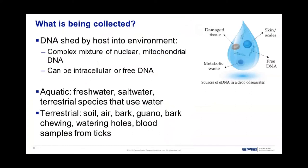What's being collected is DNA shed by the organism into the environment — a complex mixture of nuclear and mitochondrial DNA. In a drop of water there's metabolic waste, damaged tissue, skin cells, scales, and free DNA, all existing in aquatic and even terrestrial habitats. In aquatic habitats we consider freshwater, saltwater, or terrestrial species using water such as drinking ponds, or like a salamander using an ephemeral pond to lay eggs before moving on.